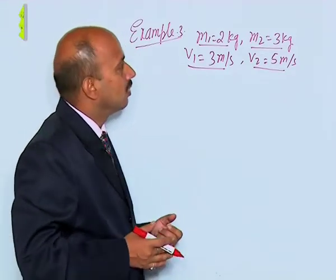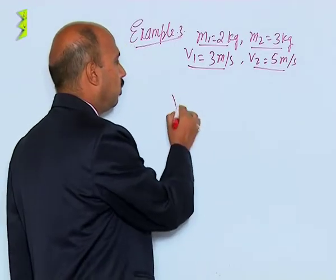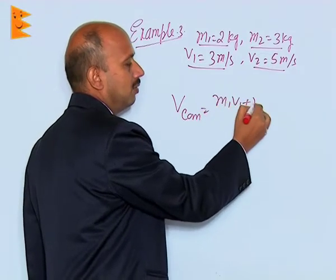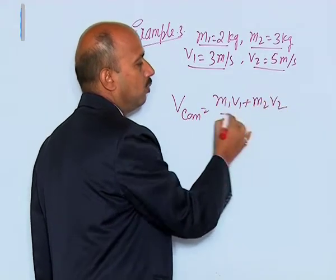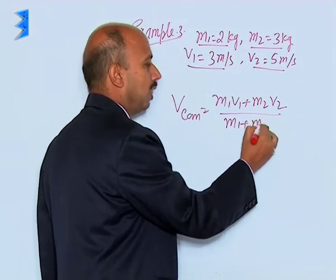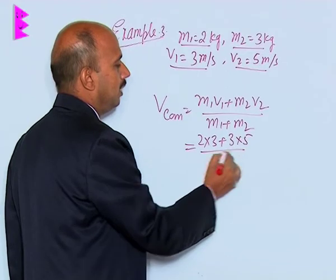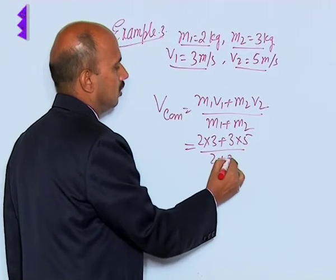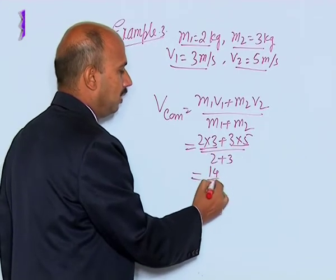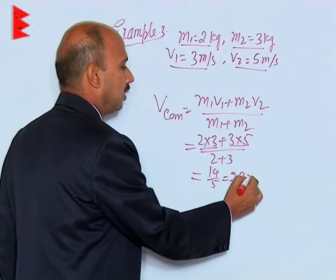If they are moving in opposite directions, you can write minus. Now, you have to find the speed of the center of mass. The formula for the speed of the center of mass is (m1V1 + m2V2) / (m1 + m2). So you can write 2×3 + 3×5 divided by 2+3, which gives 6 + 15 = 21... that is 14 divided by 5, equal to 2.8 meters per second.